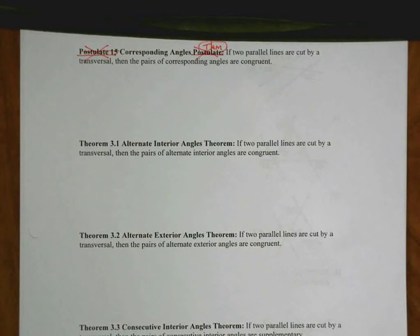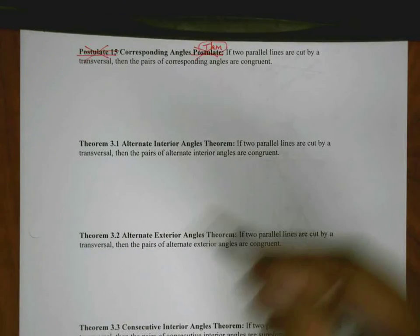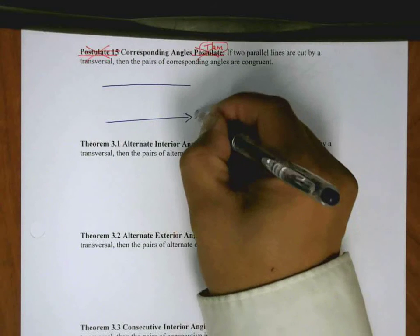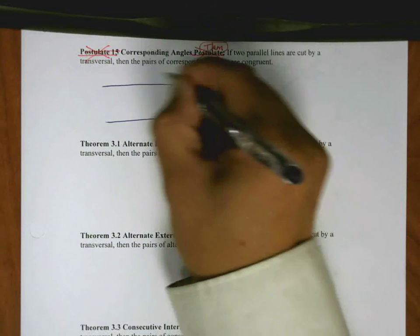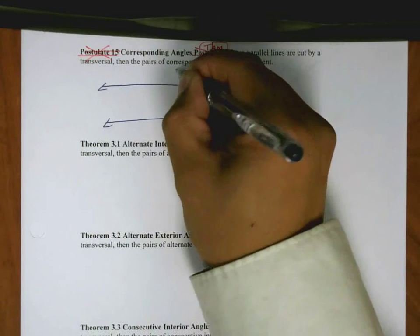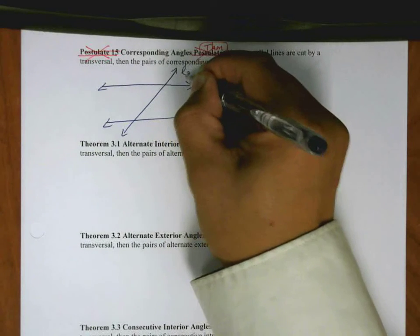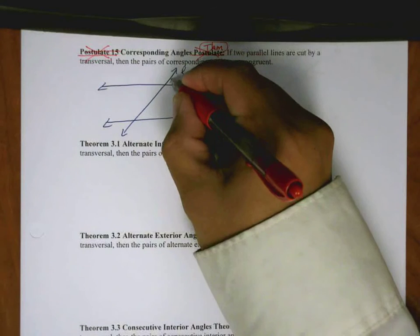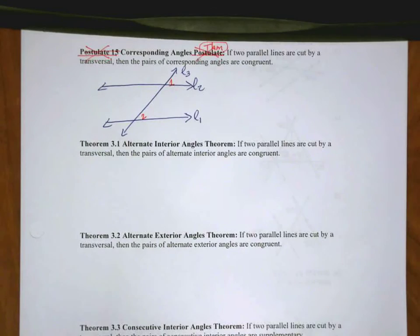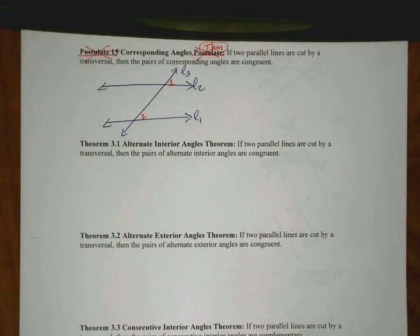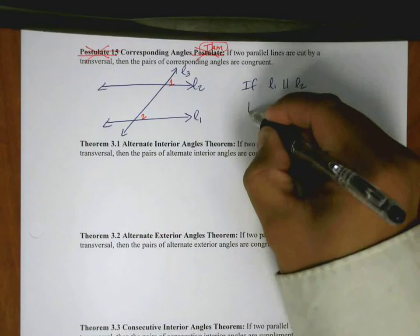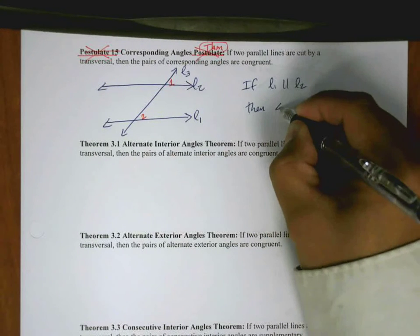Let's see first what this theorem says. If two parallel lines are cut by a transversal — here's a line, here's a transversal — if the lines are parallel, then the pairs of corresponding angles are congruent. So this is angle 1 and this is angle 2. This basically says if L1 is parallel to L2, then angle 1 is congruent to angle 2.